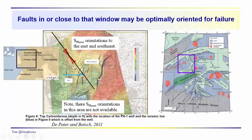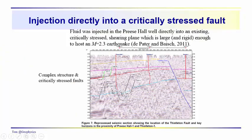This is a seismic line going almost through the Preese Hall well. You can see the fault interpretation — there are some faults that haven't been interpreted, indicating a complexly faulted area with a lot of growth to the west. This is the area where a magnitude 2.3 earthquake occurred during the stimulation of the Preese Hall well. The complex structure and the orientation of the Maximum Compressive Principal Stress would have been a deterrent to completing a well in this area.